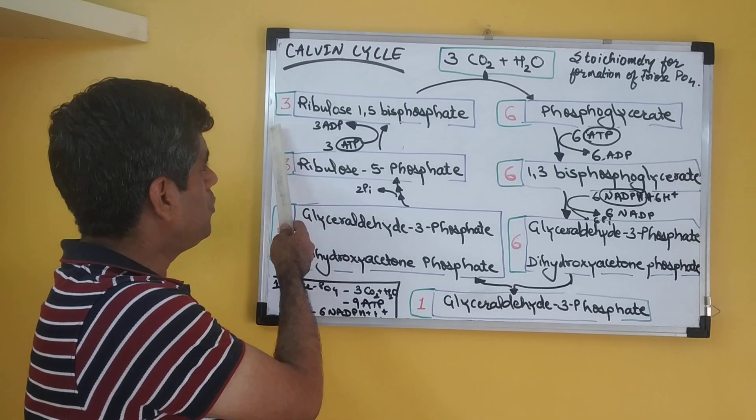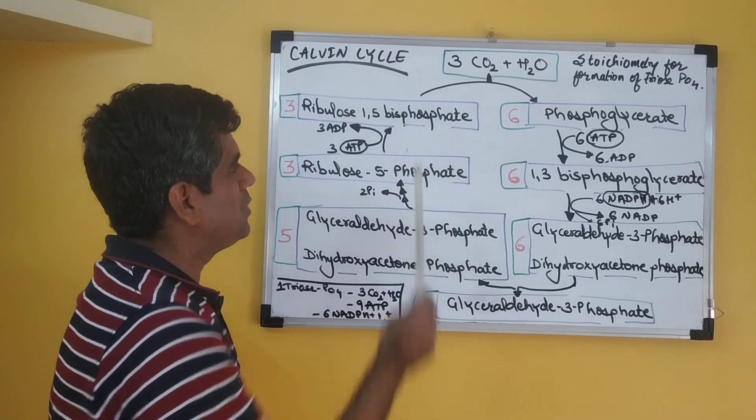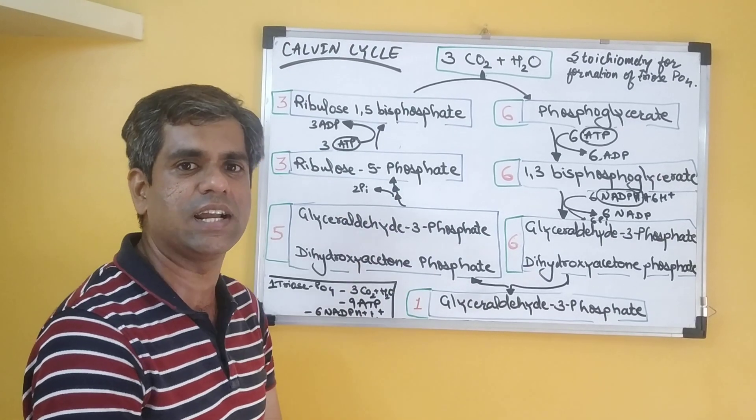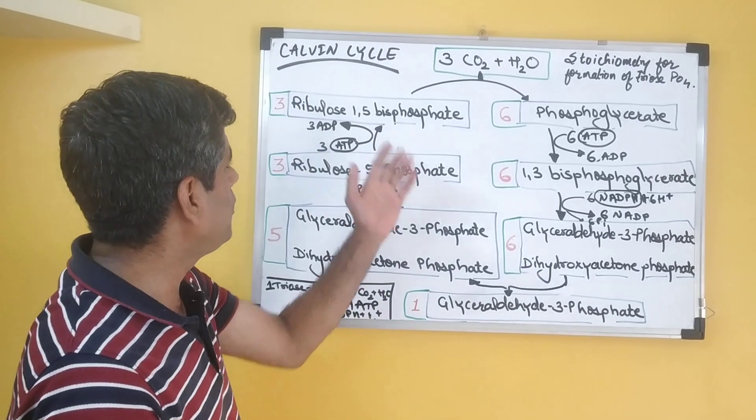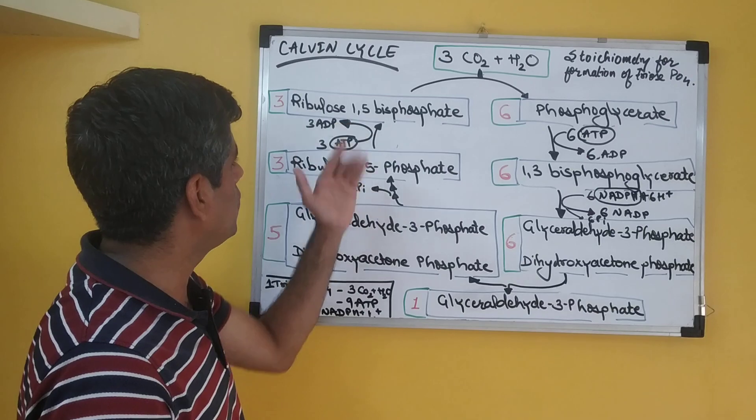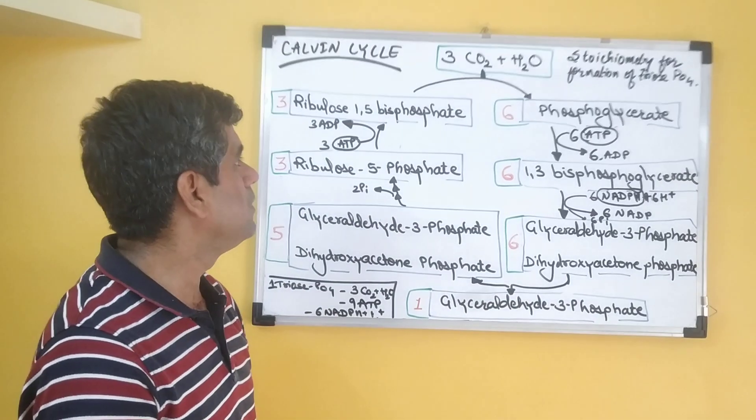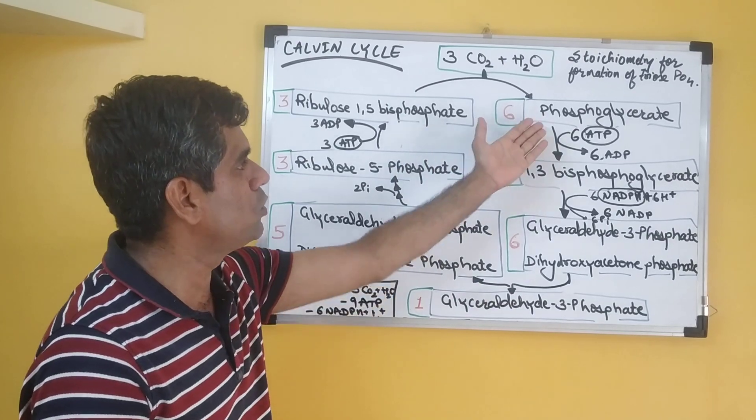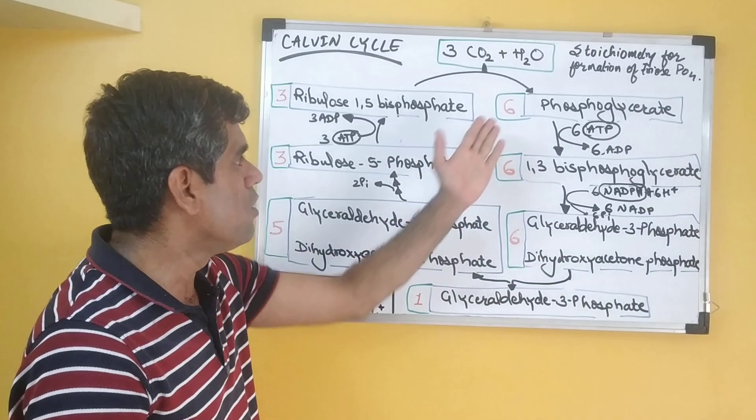So here you can see that there are three molecules of ribulose-1,5-bisphosphate, which is the primary carbon dioxide acceptor in this Calvin cycle or C3 pathway. With the help of Rubisco, these three molecules of ribulose-1,5-bisphosphate combine with three molecules of CO2 to form six molecules of 3-phosphoglycerate.